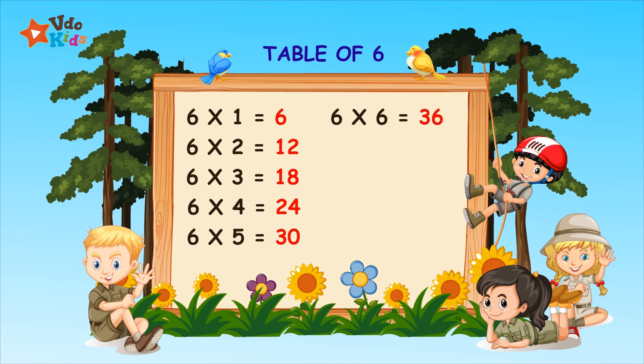Six sixes are thirty-six. Six sixes are thirty-six. Six sixes are thirty-six. Six sevens are forty-two. Six sevens are forty-two.